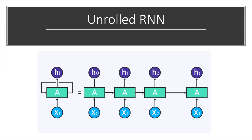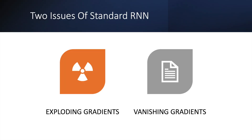So those are the good things about recurrent neural networks — but what are the problems? There are two major obstacles RNNs have to deal with. The first is exploding gradients, where the algorithm assigns extremely high importance to weights without good reason — this can be solved by truncating or squashing the gradients. The second is vanishing gradients, which occur when gradient values become too small and the model stops learning or takes too long. This is a harder problem, but it is solved by using LSTM.